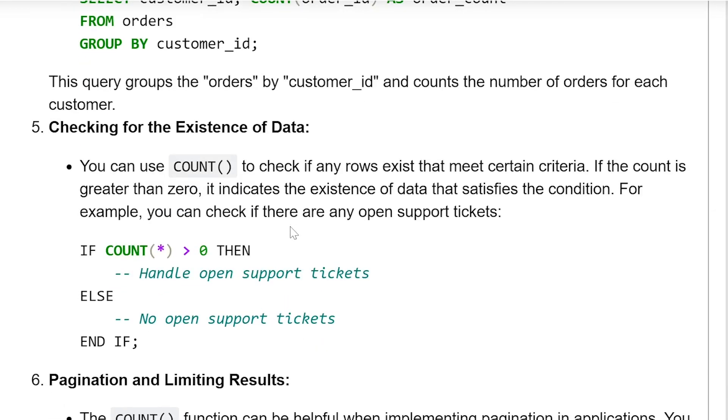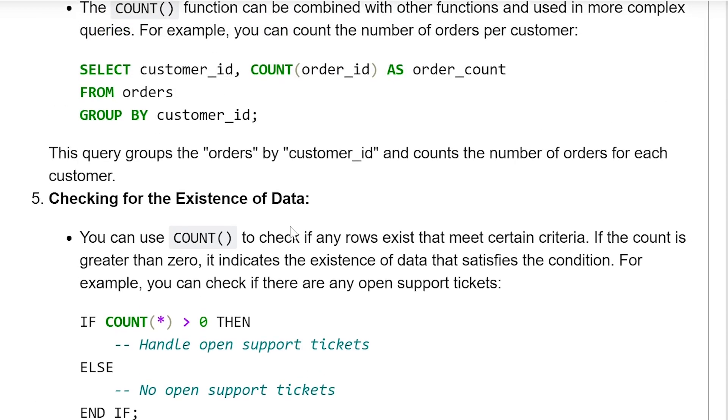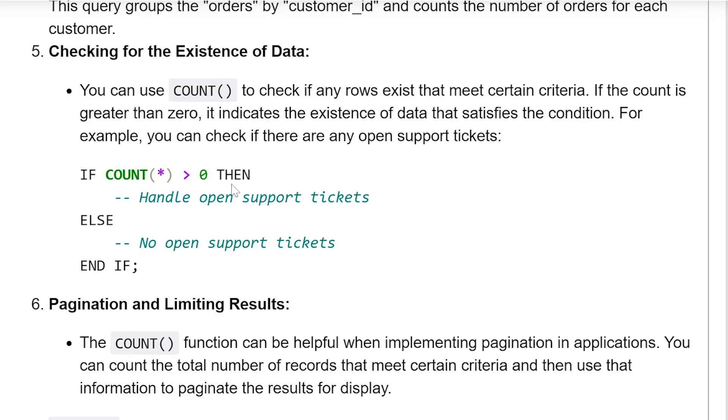Checking for existence of data. You can use count to check if any rows exist that meet certain criteria. If the count is greater than zero, it indicates the existence of data that satisfies the condition. For example, you can check if there are any open support tickets. If count star is greater than zero, then handle open support tickets, else no open support tickets.